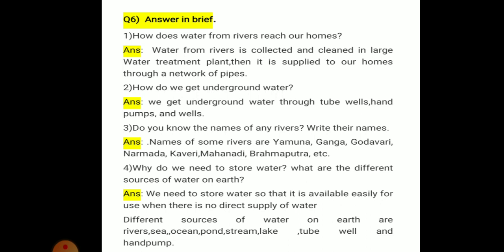Different sources of water on earth are river, sea, ocean, pond, stream, lake, tube well, and hand pump. These are the different sources of water जिससे हमें earth से पानी मिलता है.